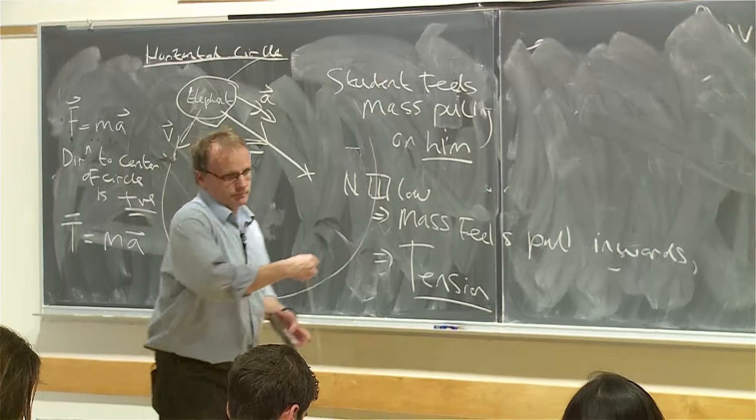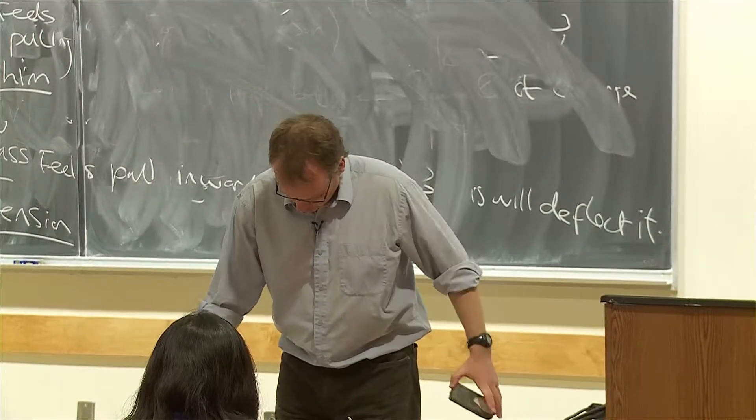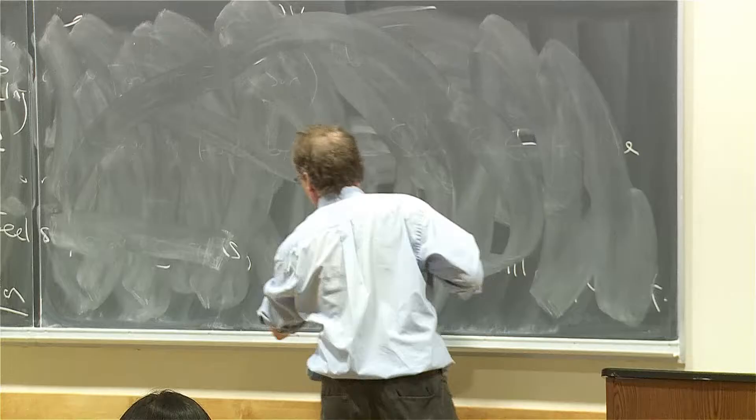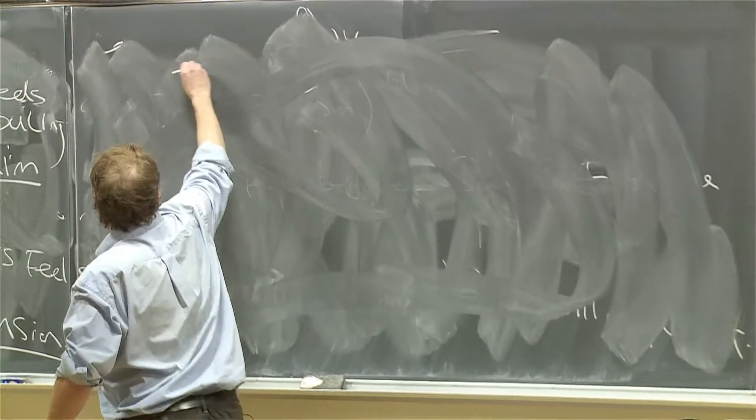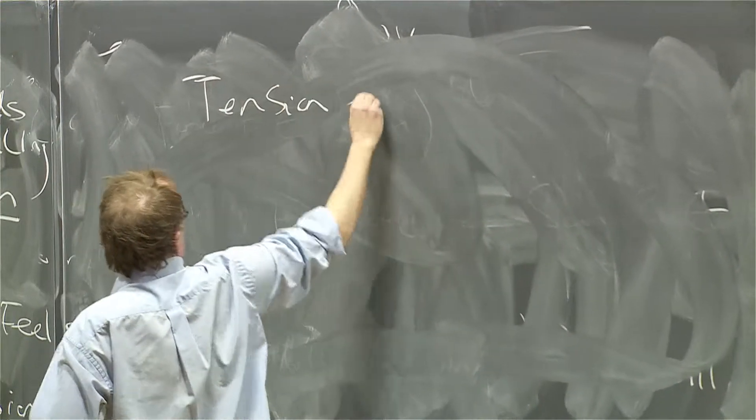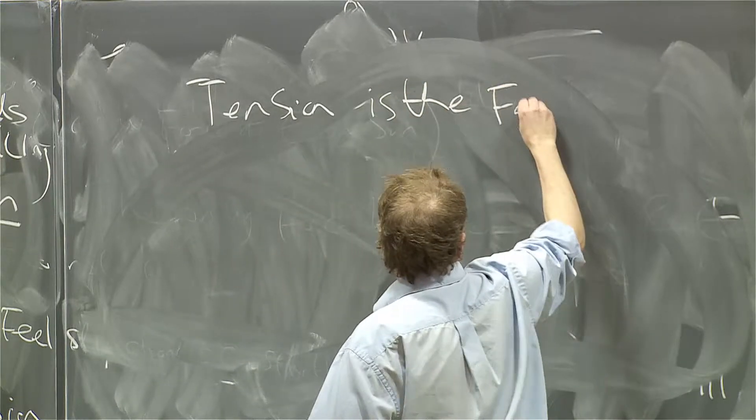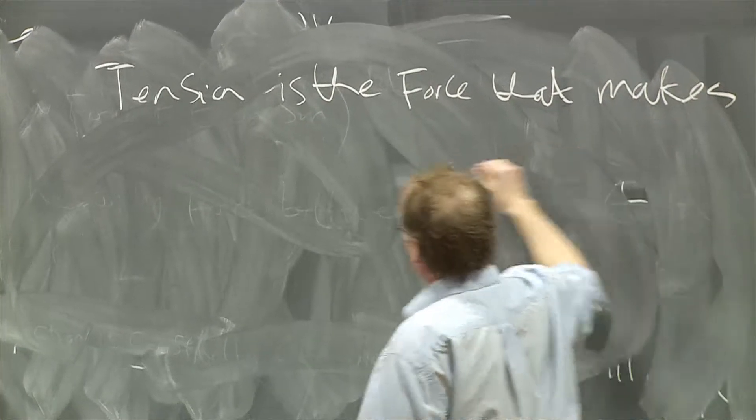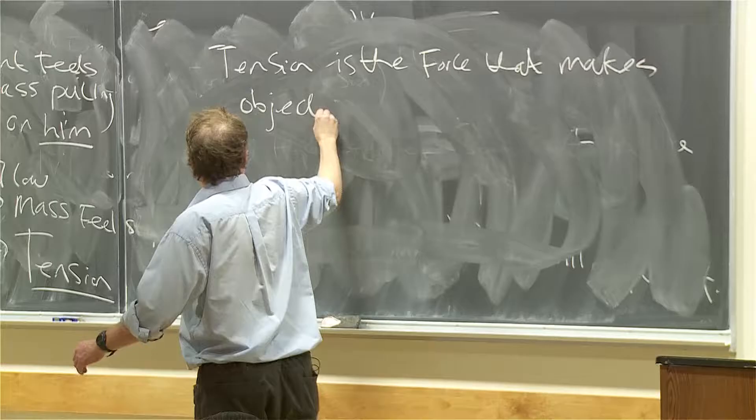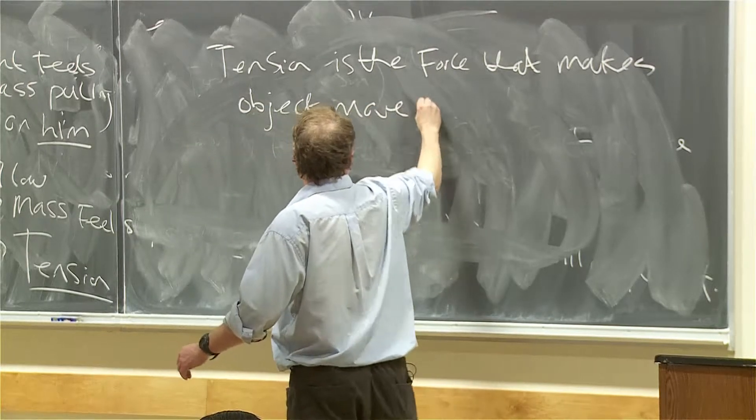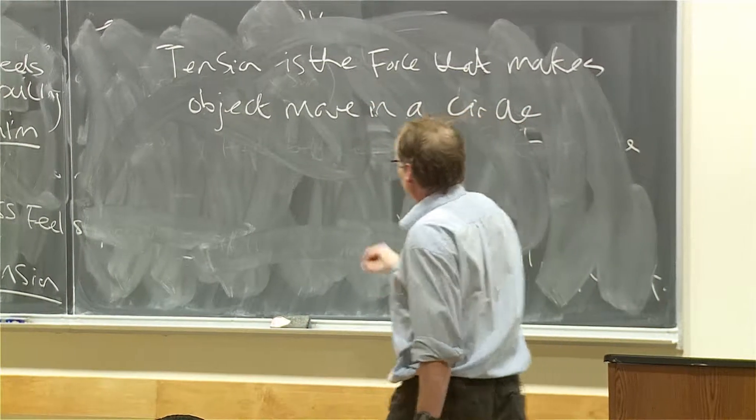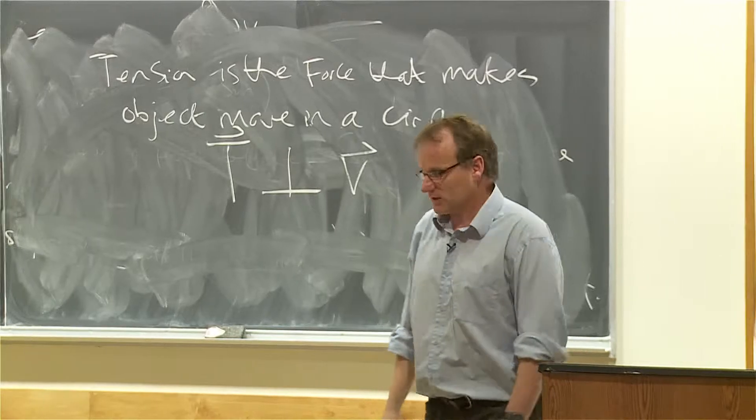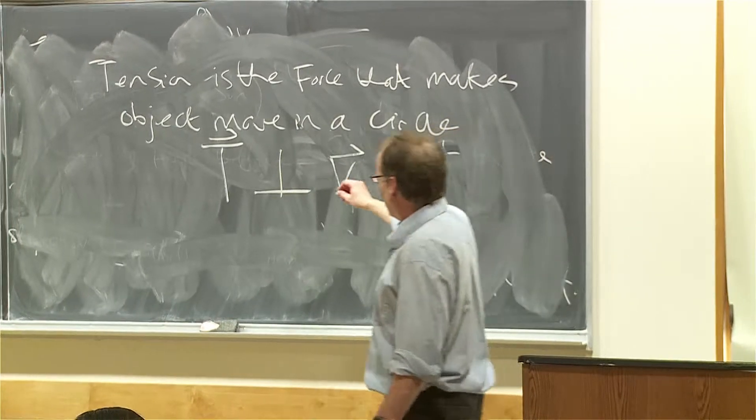So you could say, in this case, the tension is the force. It's the force that makes the object move in a circle, and the tension is perpendicular to the velocity with these vector signs because they have a direction. And that means perpendicular.